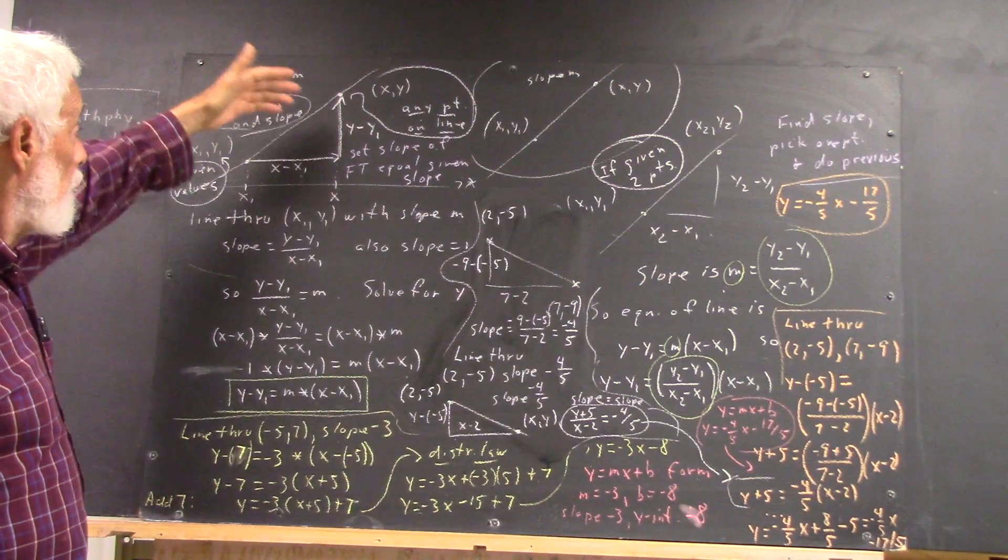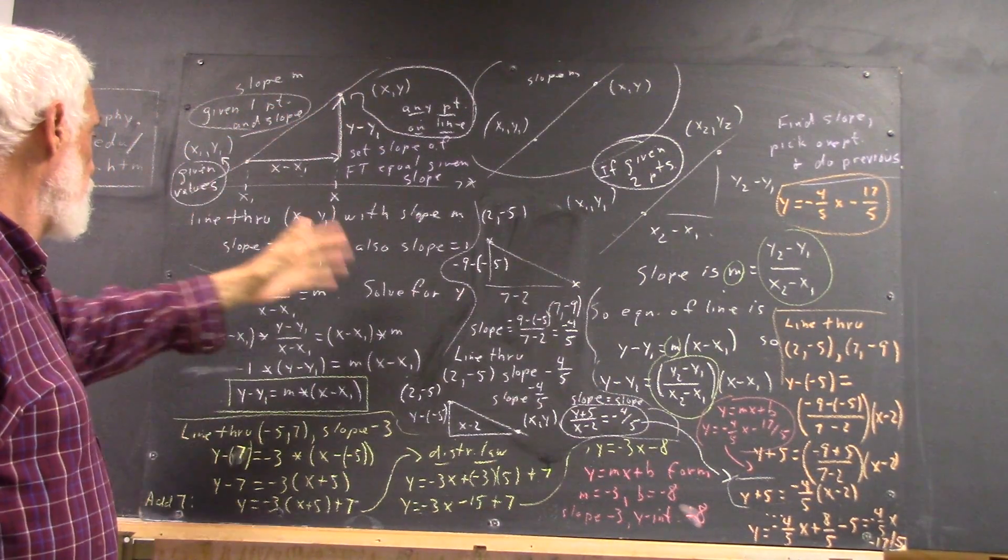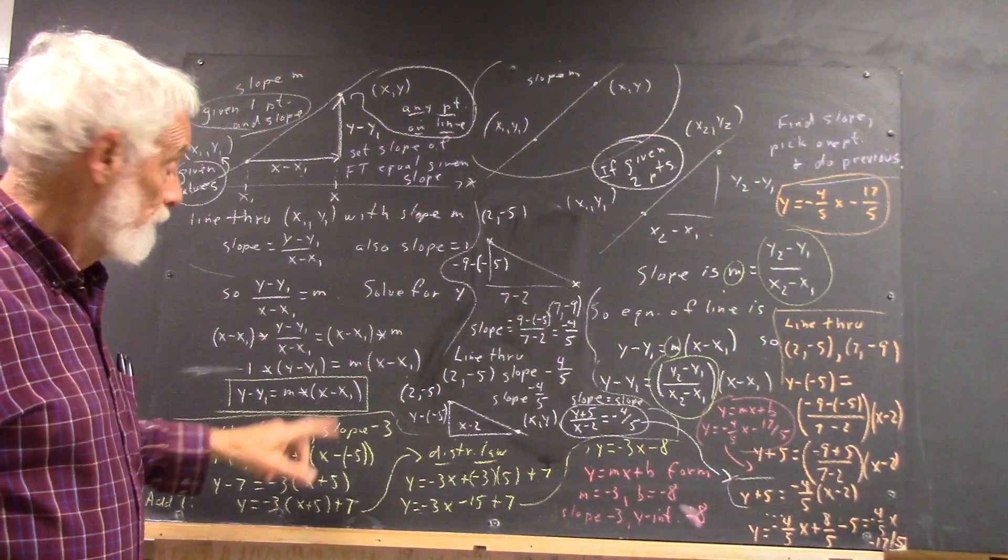Okay, well, so x and y are variables. We set out the slope equal to the slope, and we get this. We do the algebra, and we get this form.